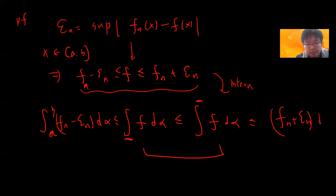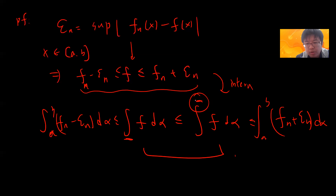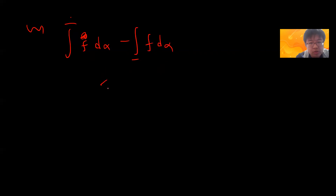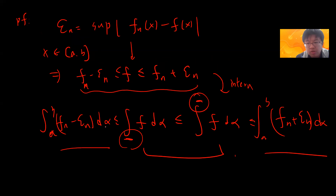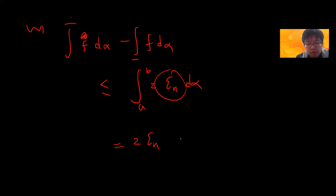For f to be Riemann integrable, the upper integral and lower integral difference must be arbitrarily small. These two bounds — fn minus epsilon_n and fn plus epsilon_n — when subtracted give you 2 * epsilon_n * (alpha(b) - alpha(a)), since epsilon_n is a constant with respect to the integration variable.